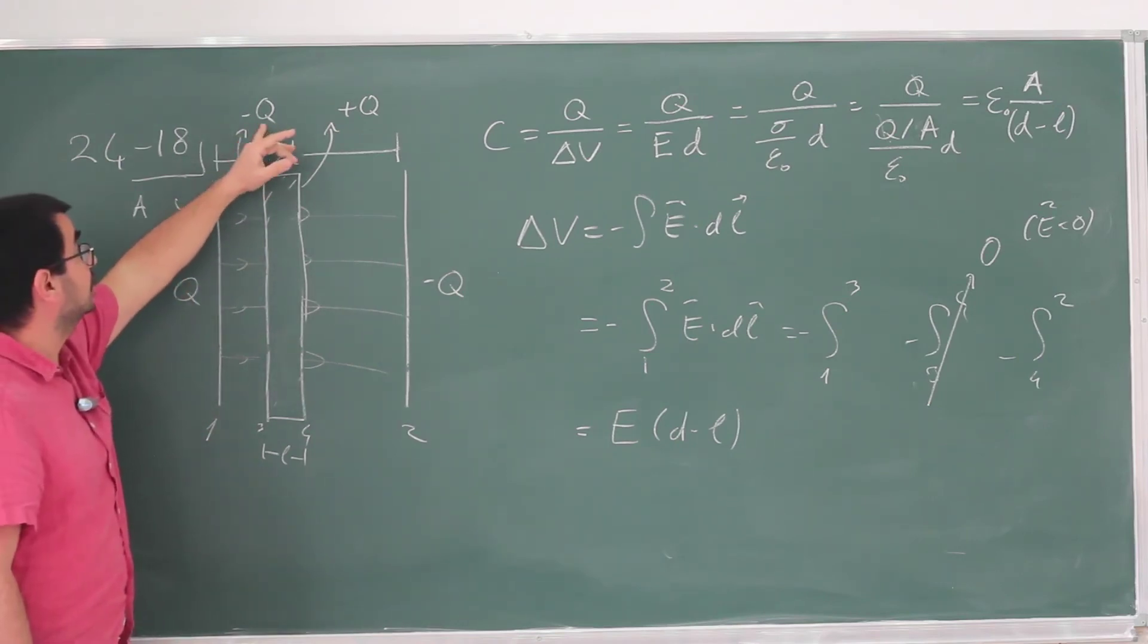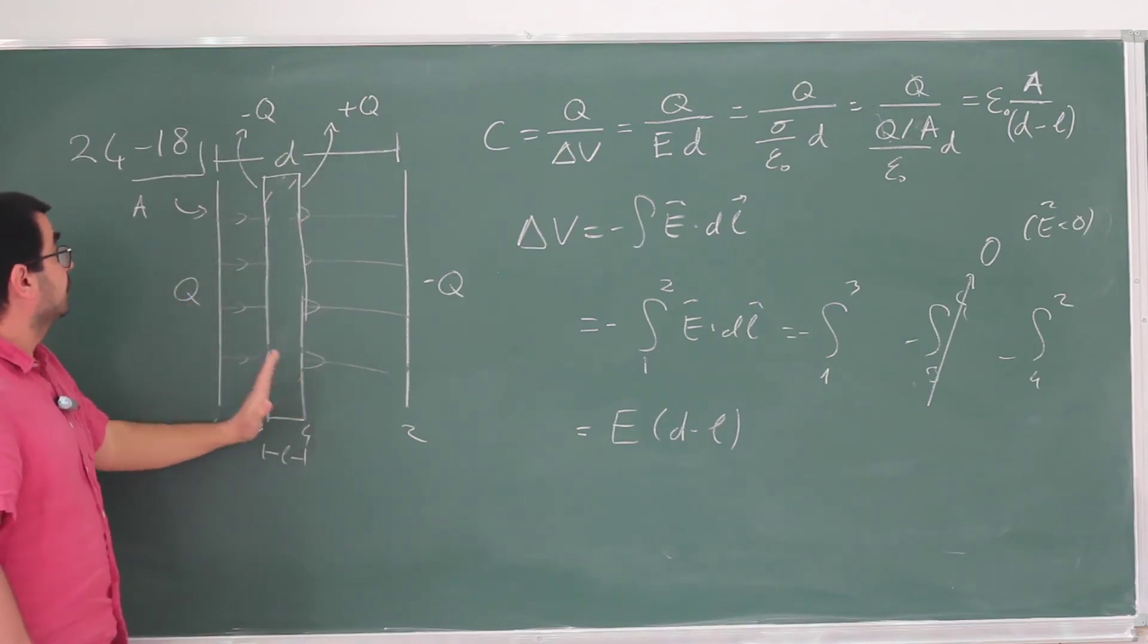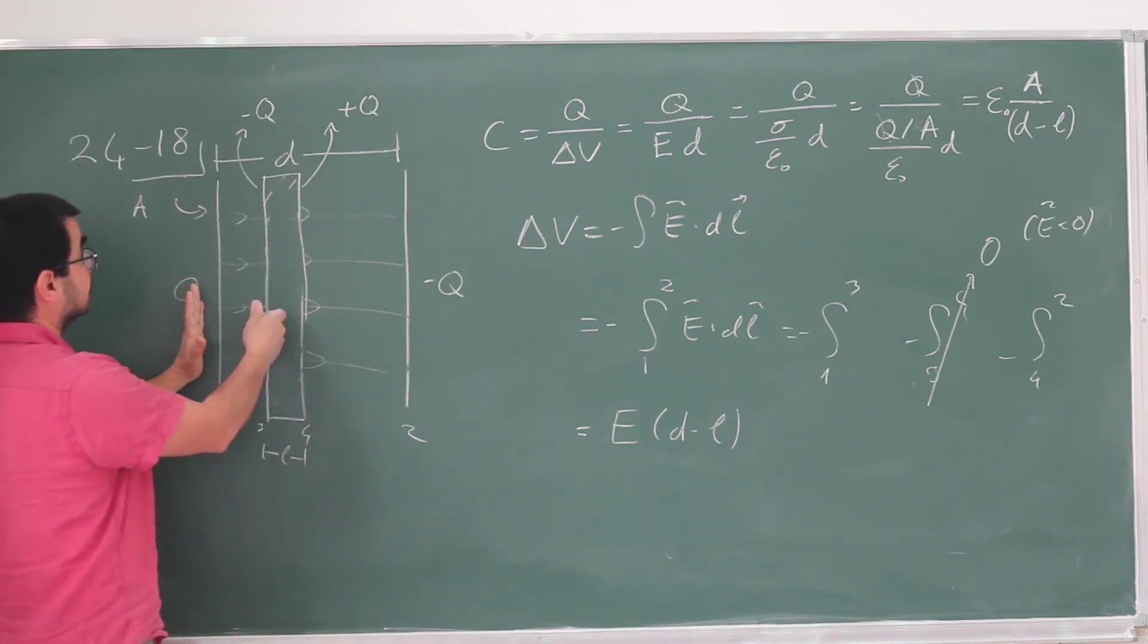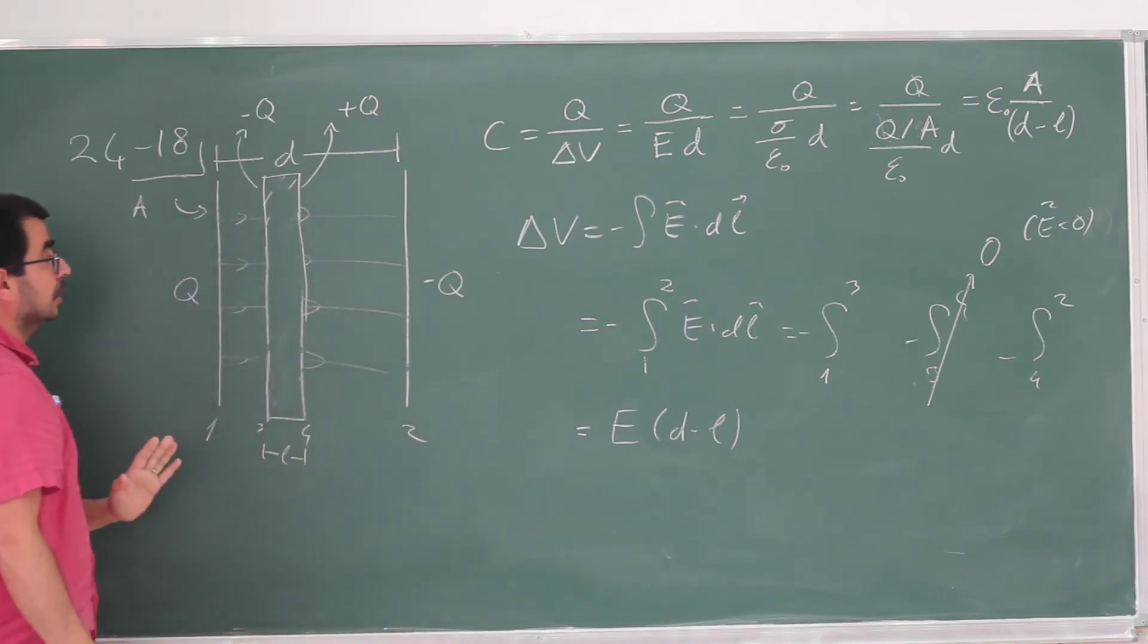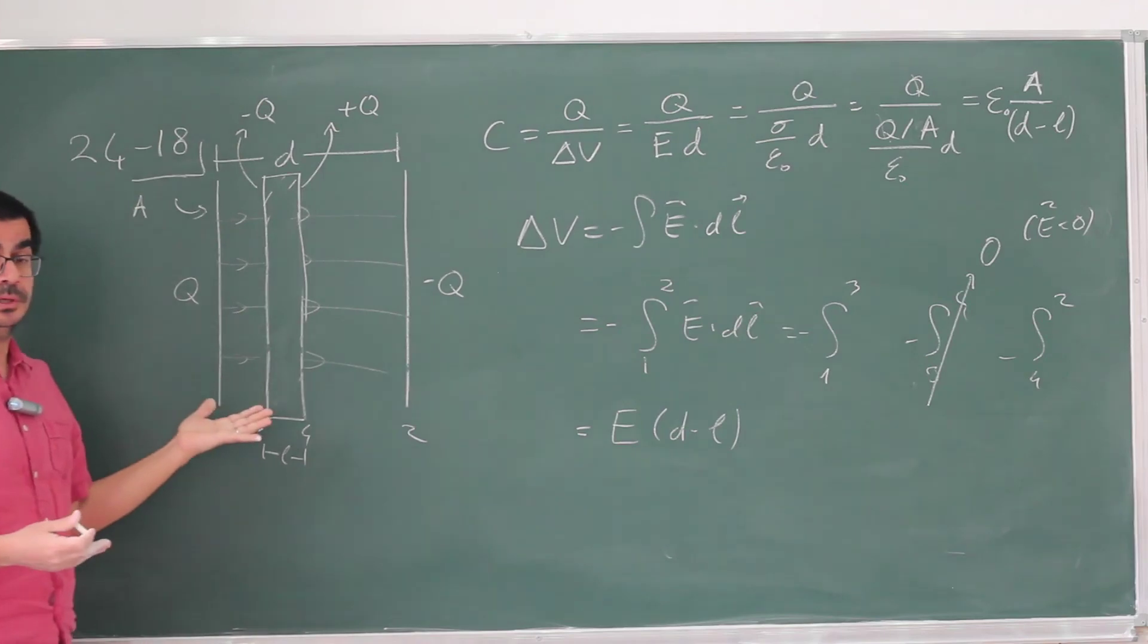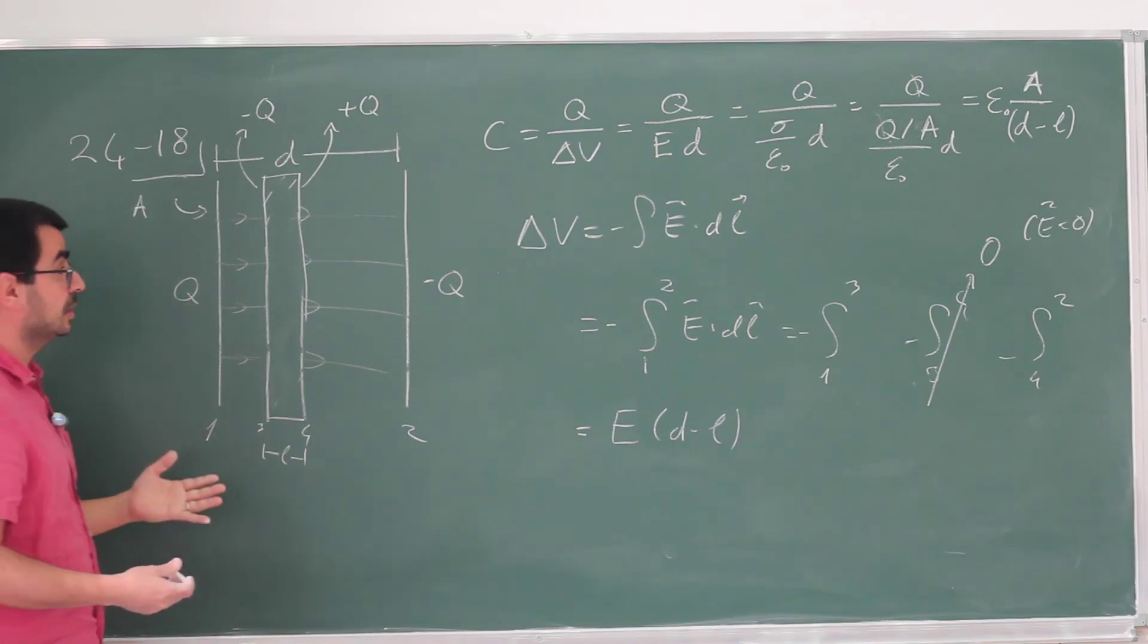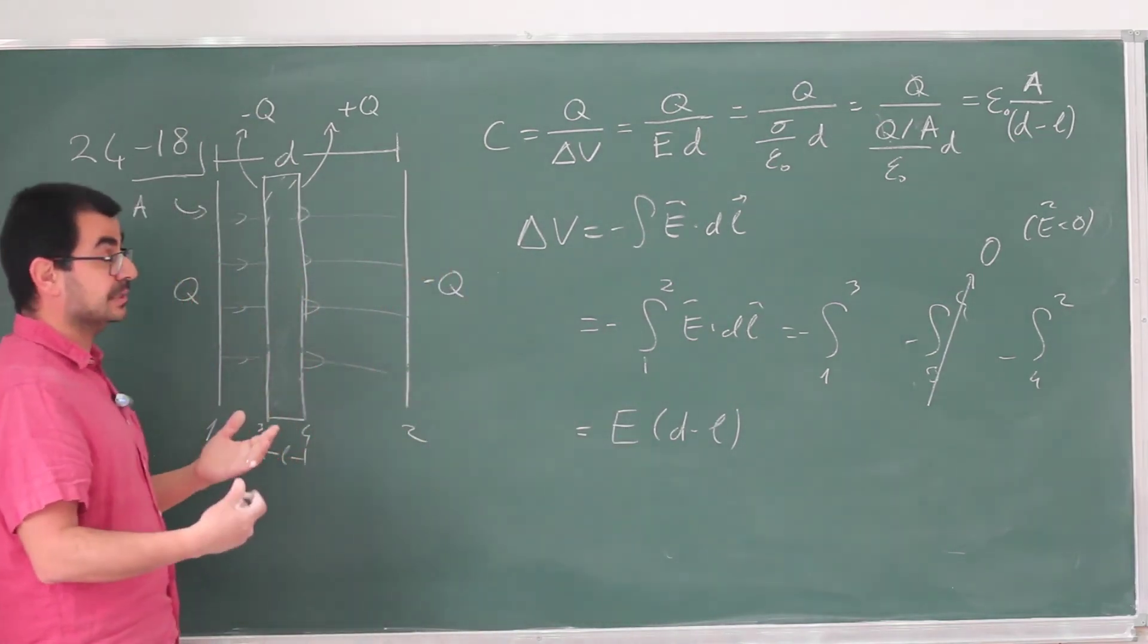Because you're producing some minus Q here, some plus Q here. So these act like plates. So this acts like a little capacitor of its own. This acts like a little capacitor of its own. And they have the same configuration as the original one. They have the same electric field strength as your original capacitor because they have the same charge densities on the plates and they have the same geometry. So the electric field strength doesn't change. What changes is the path over which the electric field exists.